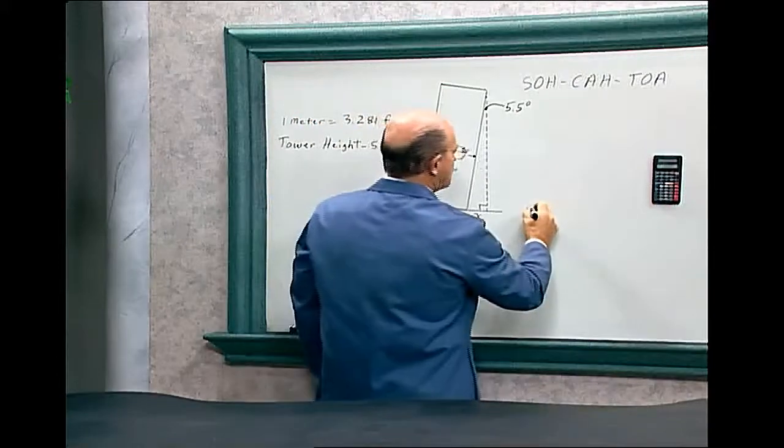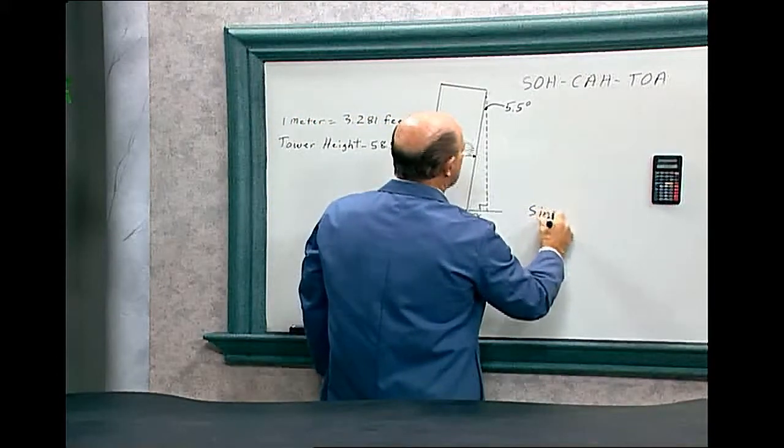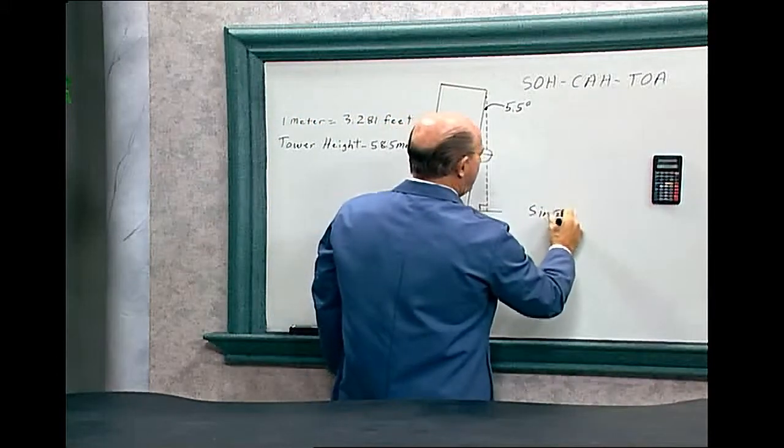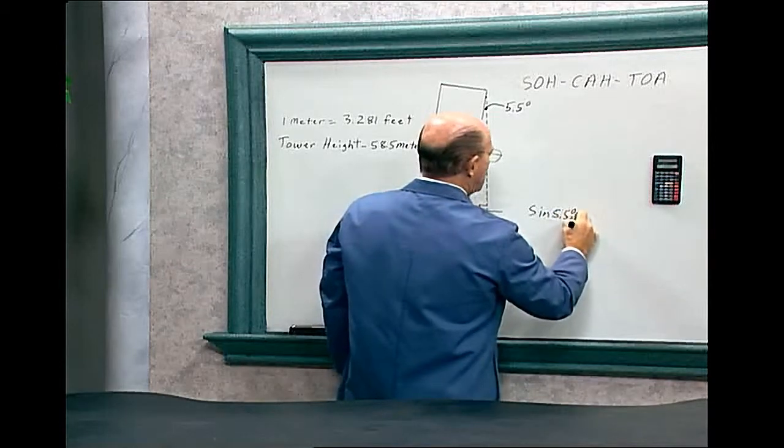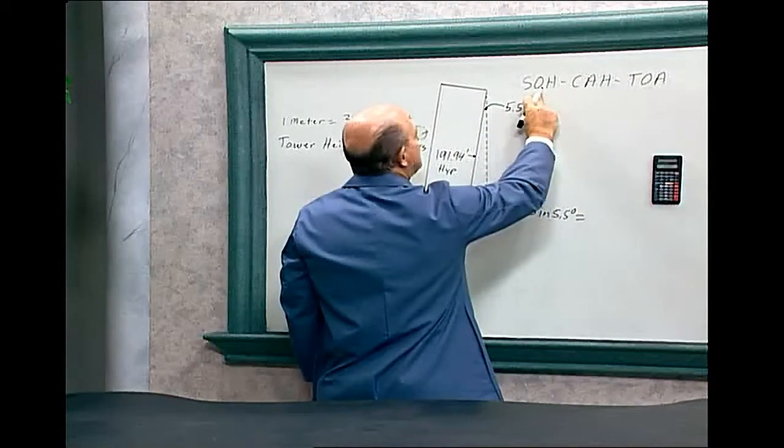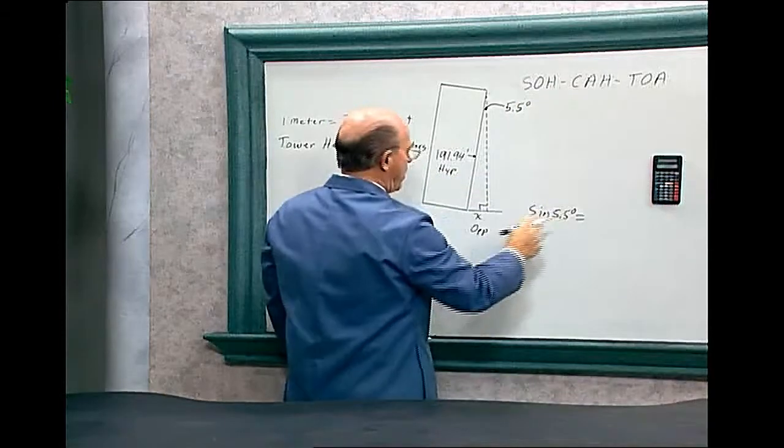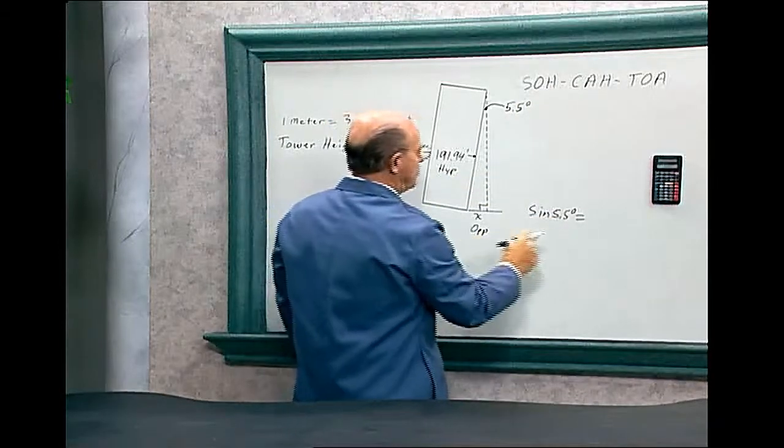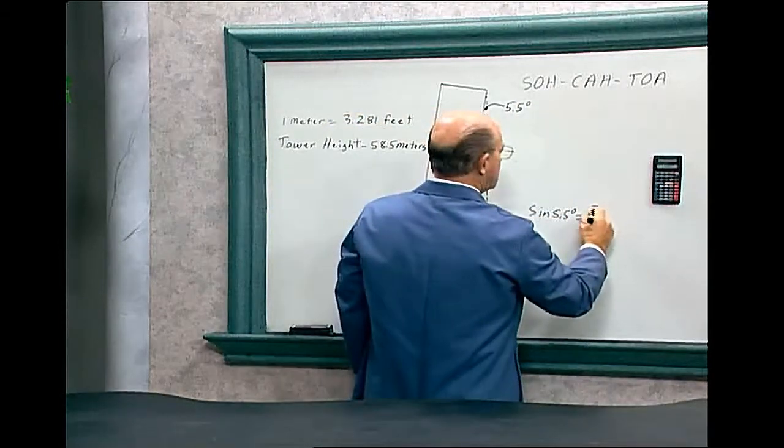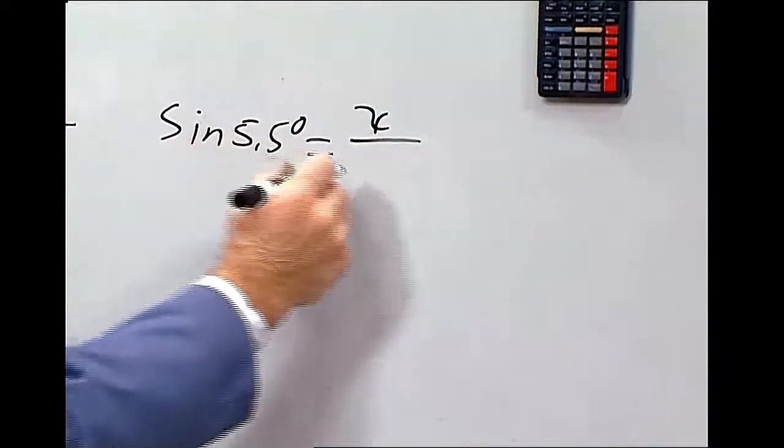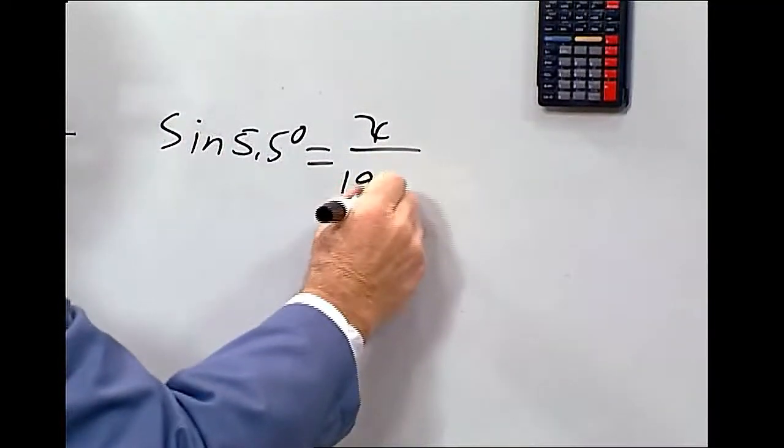Now which formula has opposite and hypotenuse? That's a sine. So sine of 5.5 degrees equals opposite. Remember, Sohcahtoa equals the opposite, and that's the x over the hypotenuse, that's 191.94.